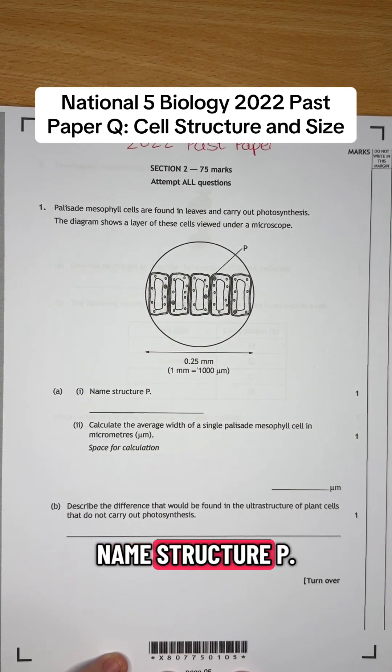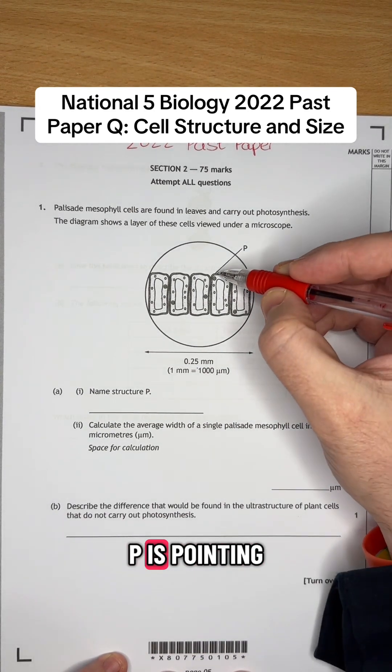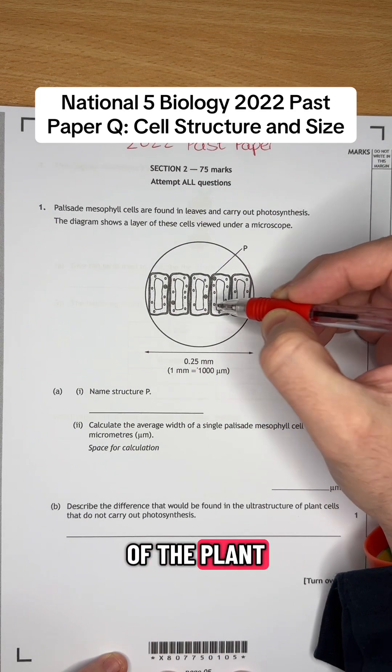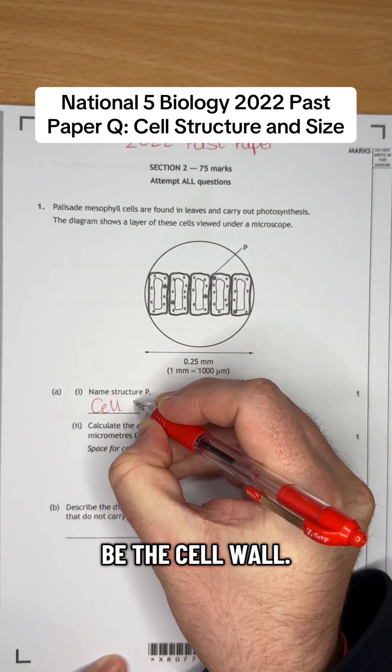Part A, 1, it says name structure P. P is pointing to the outside of the plant cell there. So that's going to be the cell wall.